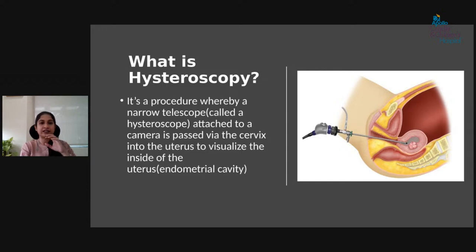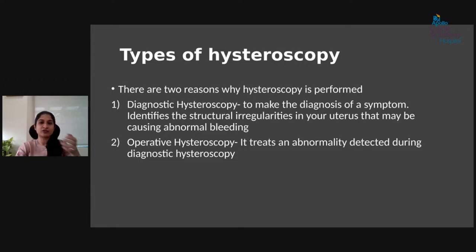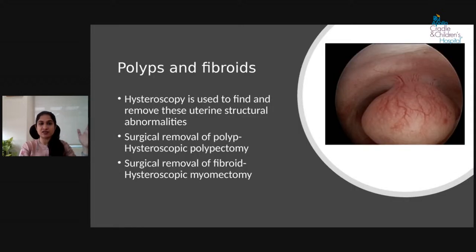Diagnostic hysteroscopy makes the diagnosis of symptoms and identifies structural irregularities in the uterus causing abnormal uterine bleeding. Operative hysteroscopy treats whatever is found — we can see through the screen and remove it. This is the key advantage of hysteroscopy compared to blind procedures like normal D&C, where you cannot see inside. With hysteroscopy, you have the 'see and treat' advantage.